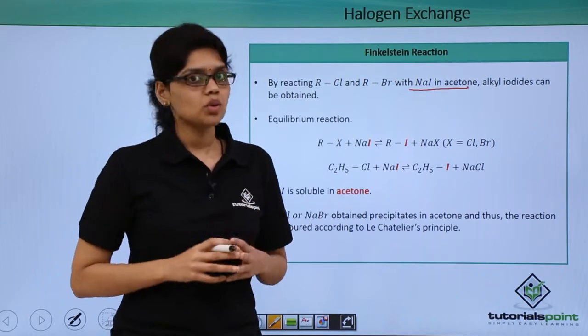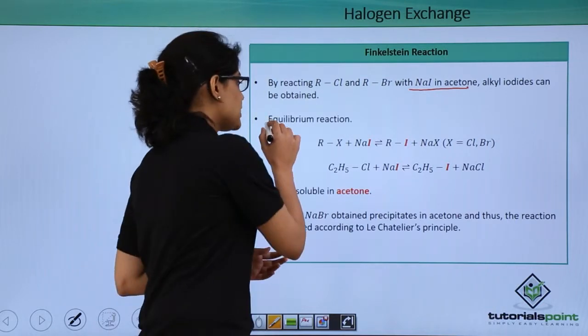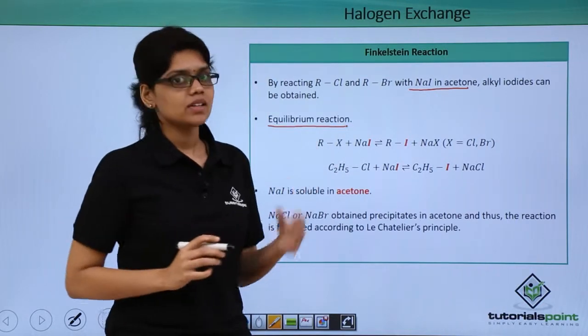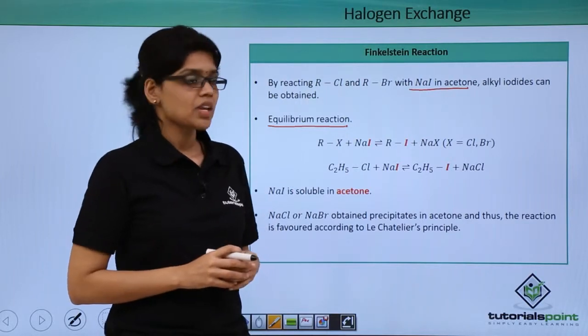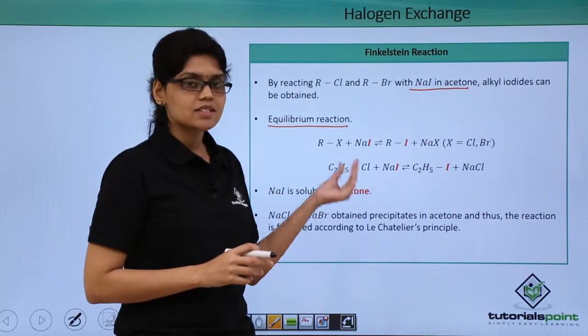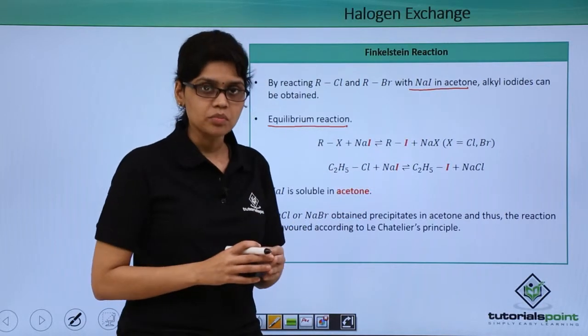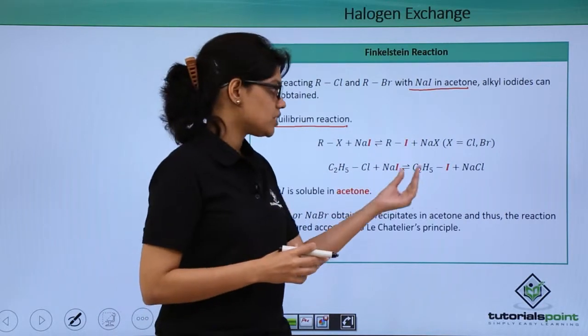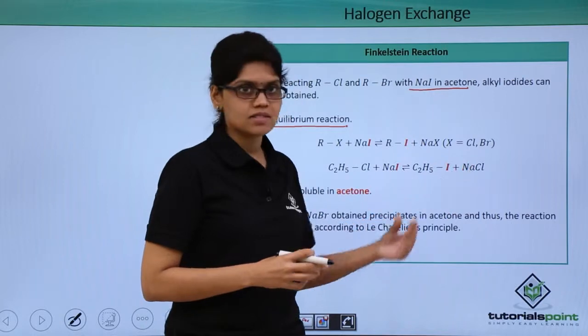An important thing to note is that this is an equilibrium reaction. Let's understand this by taking an example. If we have C2H5Cl, that is ethyl chloride, reacting with sodium iodide in acetone, the product we get is ethyl iodide and NaCl.